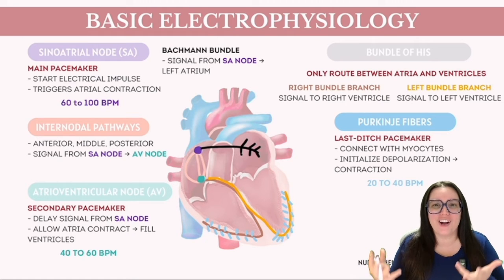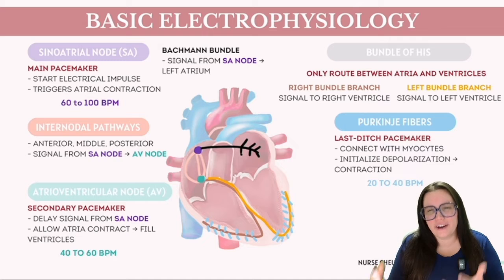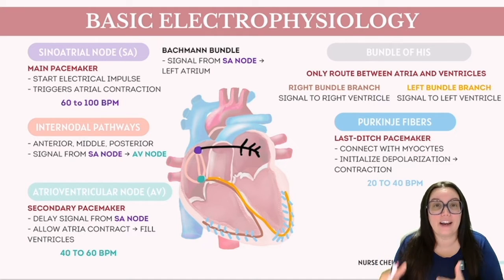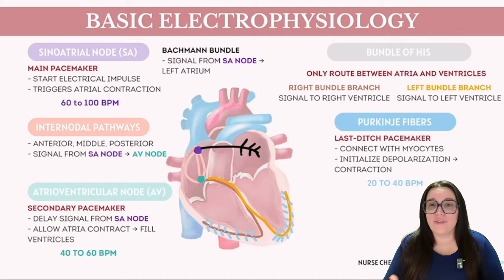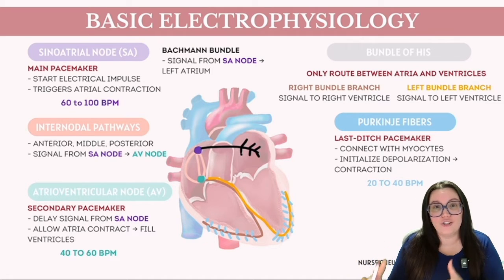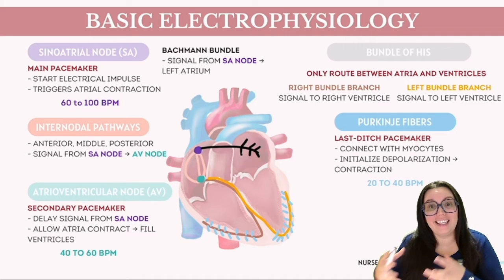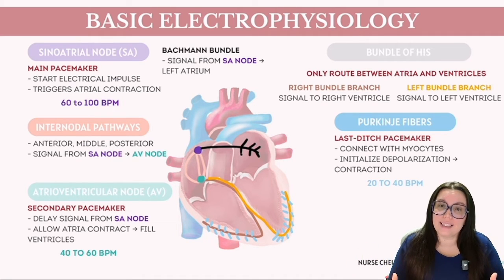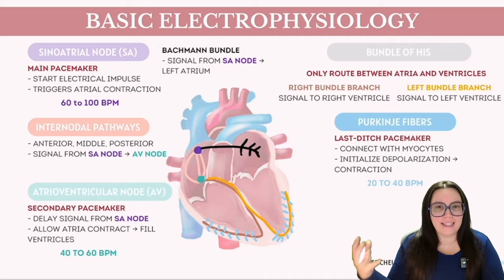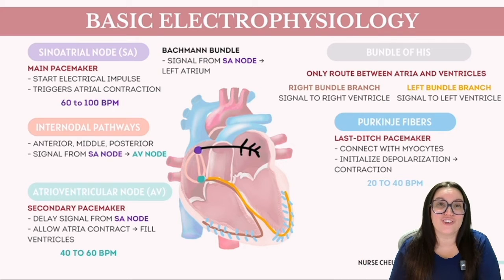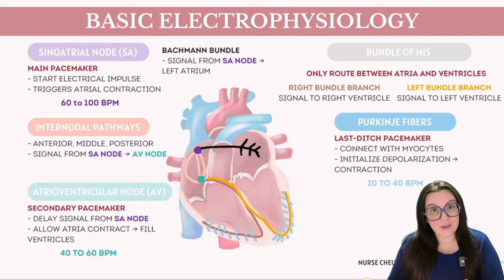An essential characteristic of the conduction system is its inherent pacemaker capability. Virtually all components possess their own intrinsic pacemaker rate, and these rates decrease progressively as one moves further down the system. This is essentially the body's contingency plan — should a higher pacemaker fail to initiate, a lower-level pacemaker will eventually activate to ensure the heart's contractions continue.